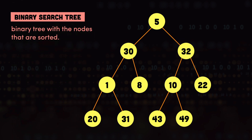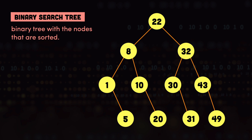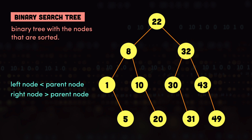Next we have binary search trees, which are binary trees where the nodes are in sorted format. We can rearrange the nodes of a binary tree to make it a binary search tree. Binary search trees have a couple of properties. The first is that the value in each left node is smaller than its parent. For example, 1 is on the left of 8 because 1 is smaller than 8; 8 is on the left of 22 because 8 is smaller than 22; and 30 is on the left of 32 because it's smaller than 32. The second property is that the value on each right node is greater than its parent — so 10 is on the right of 8, 32 is on the right of 22, and 43 is on the right of 32.